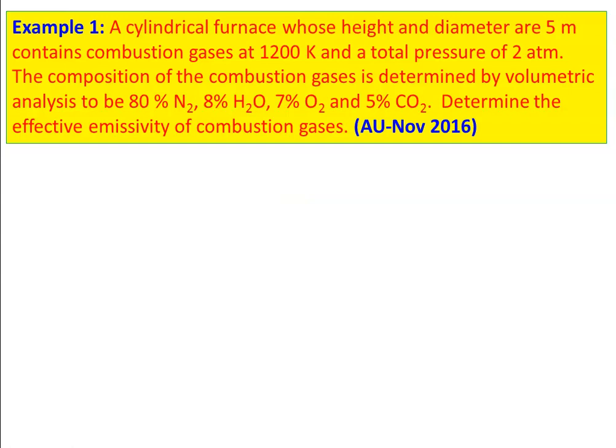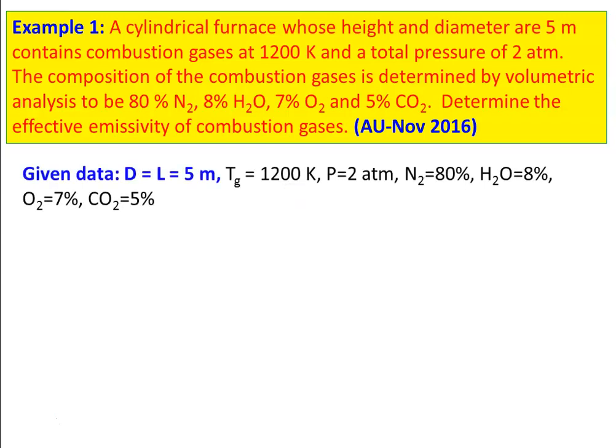We take example number one from the Anna University question paper. A cylindrical furnace whose height and diameter are equal to 5 meters contains combustion gases at 1200 Kelvin. The total pressure is 2 atmosphere. The composition of the combustion gases by volumetric analysis is 80% nitrogen, 8% water vapor H2O, 7% O2 oxygen, and 5% CO2. Determine the effective emissivity of the combustion gases. Given data: diameter equals length equals 5 meters, gas temperature 1200 Kelvin, total pressure 2 atmosphere, nitrogen 80%, water vapor 8%, oxygen 7%, CO2 5%.